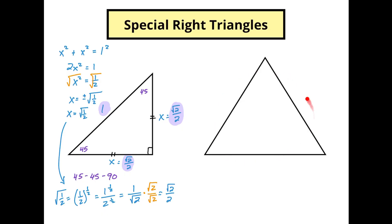Over here, for this other triangle, we have an equilateral triangle — I checked very closely to make sure all sides were the same length — and we're going to call this an equilateral triangle with sides of unit one. With any equilateral triangle, if you drop a perpendicular to make a right angle, this not only bisects the angles but also bisects the base side.